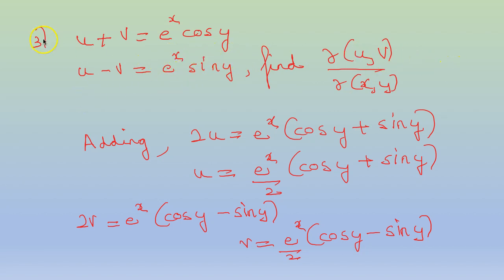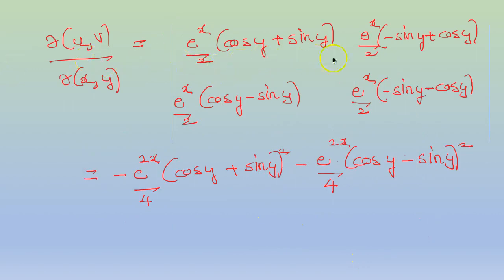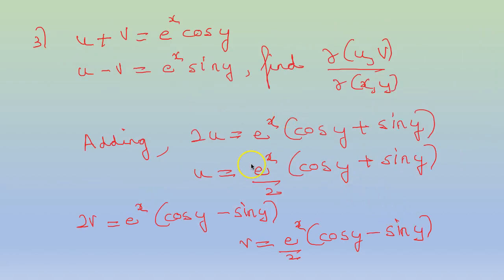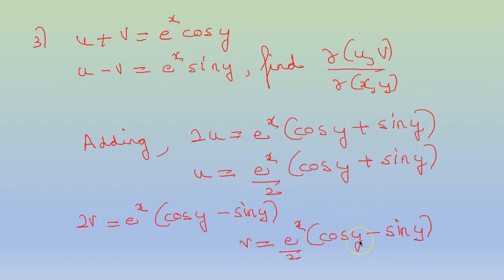Coming to the third problem. This is an implicit function. u plus v equals e raised to x cos y, and u minus v equals e raised to x sin y. Find the Jacobian. First we calculate u and v. Adding the two equations, we get 2u equal to e raised to x times (cos y plus sin y), or u equals e raised to x by 2 times (cos y plus sin y). Subtracting, we get 2v equal to e raised to x times (cos y minus sin y), or v equals e raised to x by 2 times (cos y minus sin y). The first column, partial derivative with respect to x, gives: e raised to x by 2 times (cos y plus sin y) and e raised to x by 2 times (cos y minus sin y). The second column, partial derivative with respect to y, gives: e raised to x by 2 times (minus sin y plus cos y) and e raised to x by 2 times (minus sin y minus cos y).